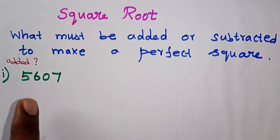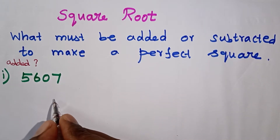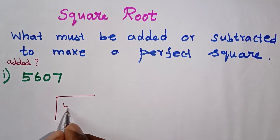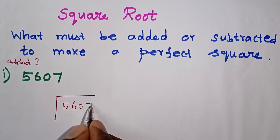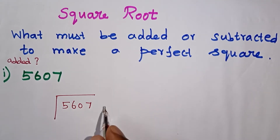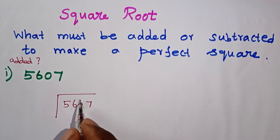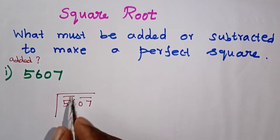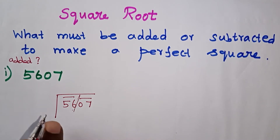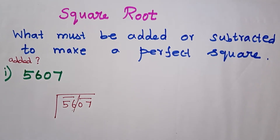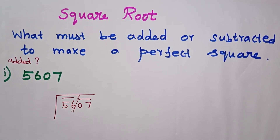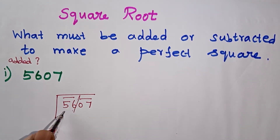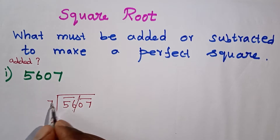The first question uses the long division method for square root. The first number is 5607. We make it a pair: 07 and 56 is the first pair. 56 is close to a perfect square — 6×6 is 36, 7×7 is 49, 8×8 is 64. So 64 is the nearest perfect square.